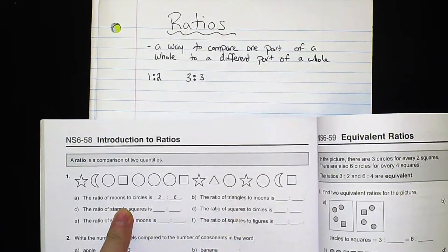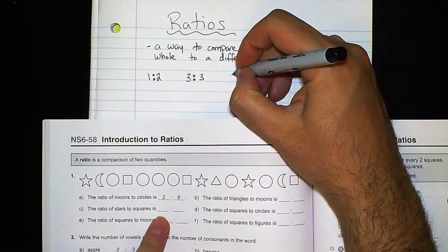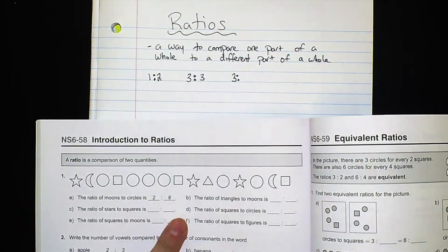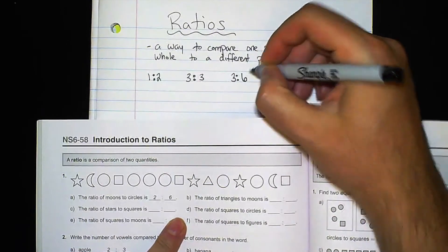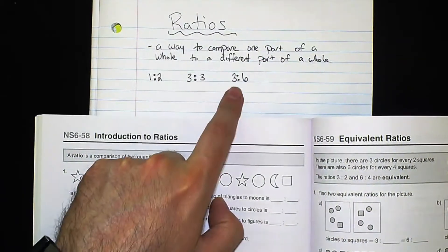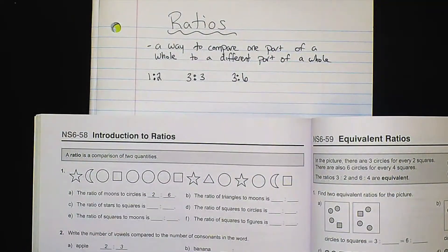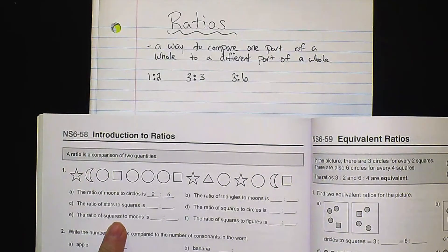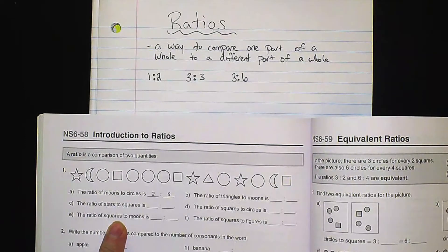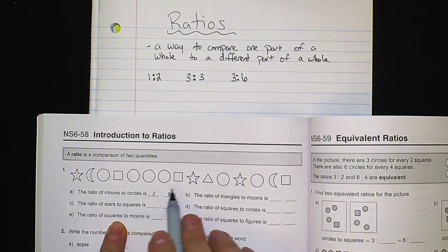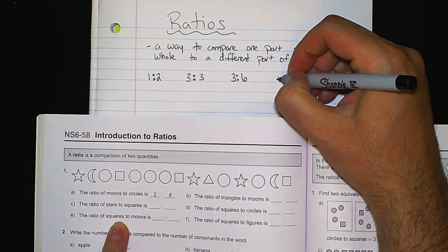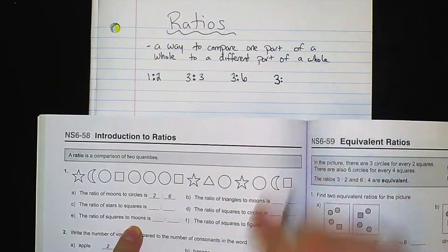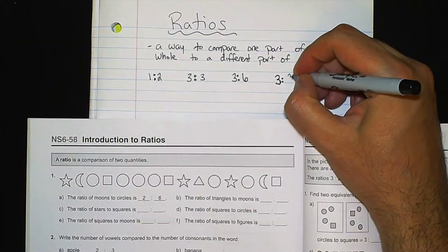Squares to circles. Well squares we know there's three because we just counted three. And circles well we know that there are six because we already did that. So for every three squares there are six circles. If we go squares to moons, squares we know that there are one, two, three. So you'd write this as three. And moons there are one, two. So three to two.